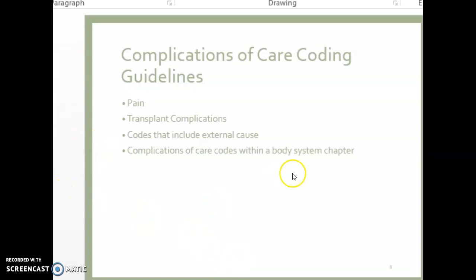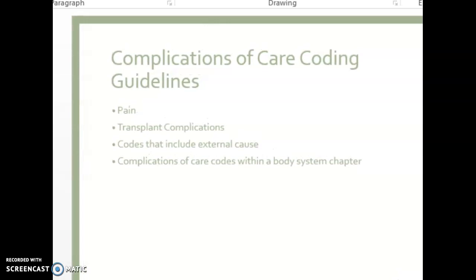When we're coding pain, this is for any kind of pain associated with devices, implants, or grafts that were left in a surgical site. We code these with the appropriate code from Chapter 19 — the Injury, Poisoning, and Complications of Care section — and then use the additional code G89.18 or G89.28 to identify whether it's chronic pain or acute pain due to the presence of the device, implant, or graft.